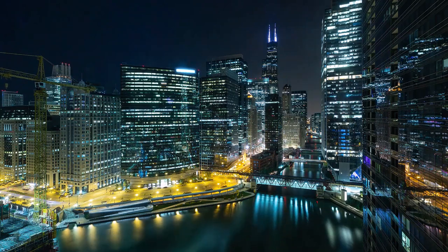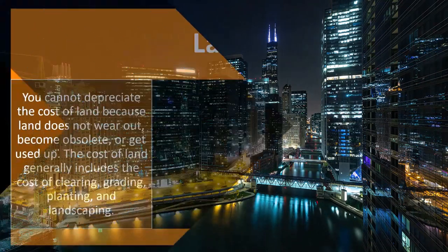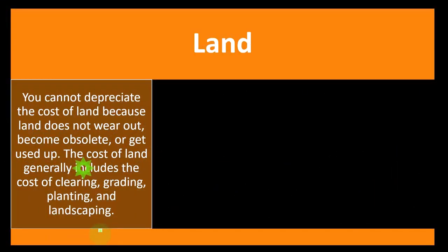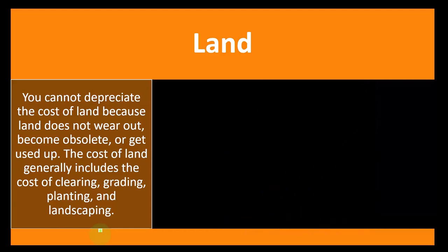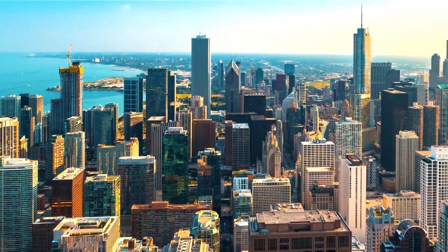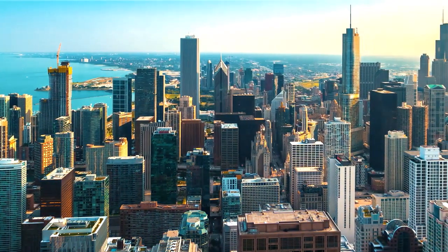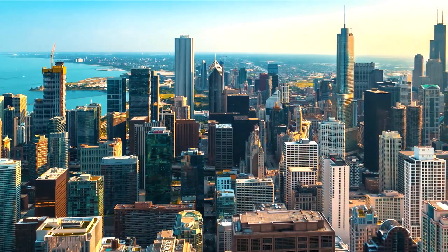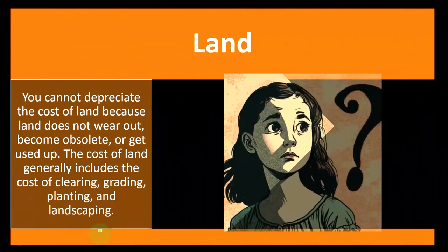If you plan on using the building, you're going to have to allocate between the land and the building. But if you plan on just clearing the building off the land — you bought the land for the land and there happened to be a building on it — then tearing down the building could be considered part of the cost of the land. There's a little bit of unusualness in that.